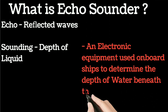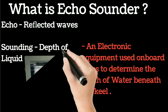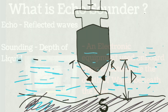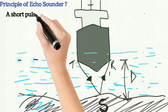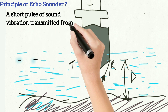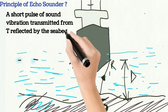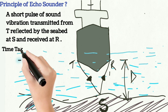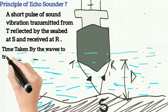This is how an echo sounder looks like. Now coming to the principle of the echo sounder: a short pulse of sound vibration is produced, or transmitted, from T, and it is reflected by the seabed at S and received at the receiver end at R.